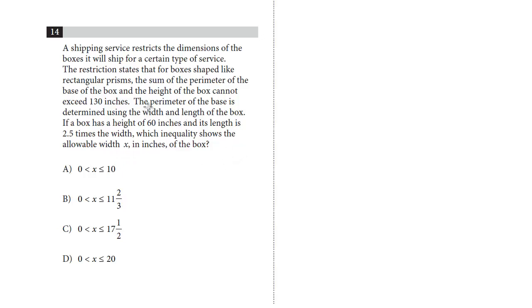If a box has a height of 60 inches and its length is 2.5 times the width, which inequality shows the allowable width x in inches of the box? We're told this is a prism, a rectangular prism. A prism just means a three-dimensional shape that has two equal bases - it could be a cylinder, for example. In this case, we have a rectangular prism. The base and the height cannot exceed 130, and cannot exceed means less than or equal to.